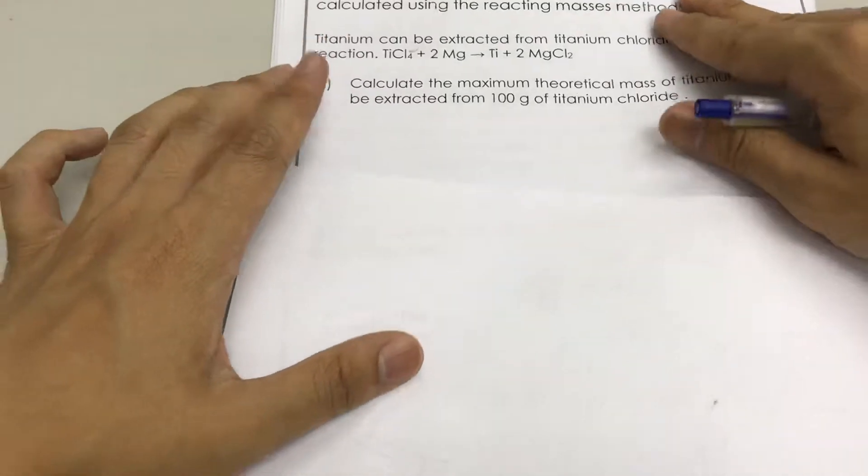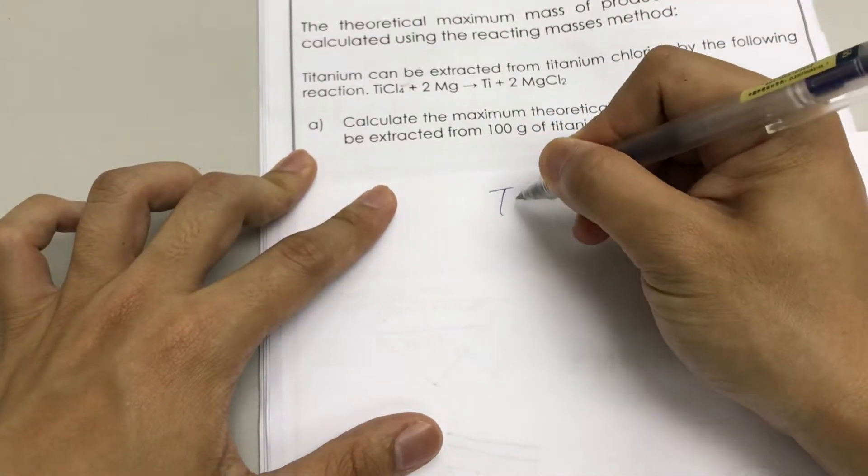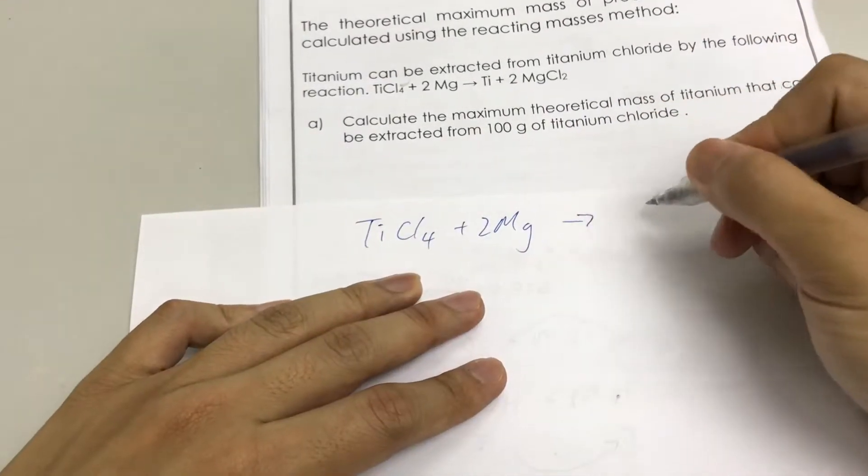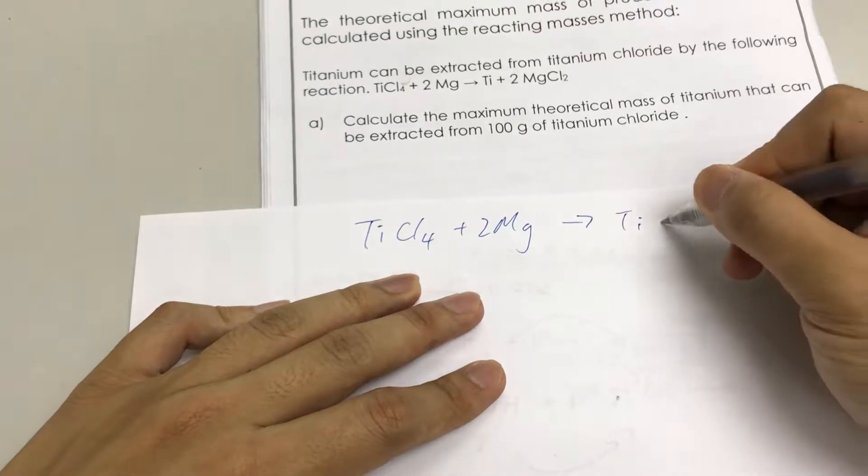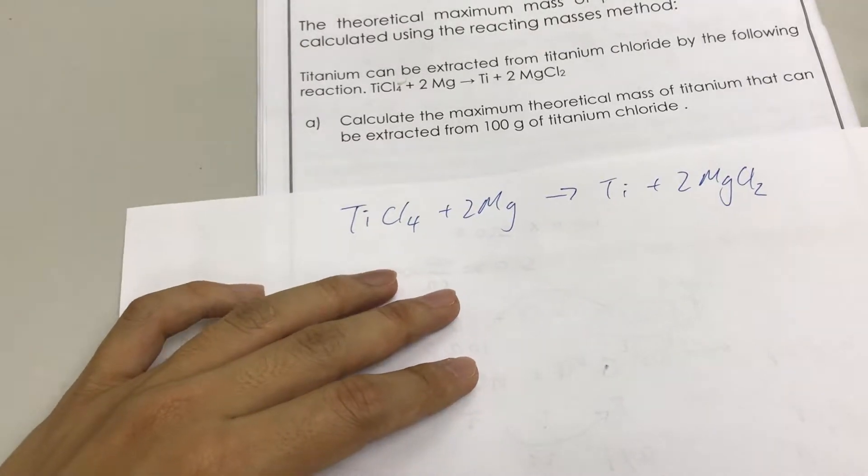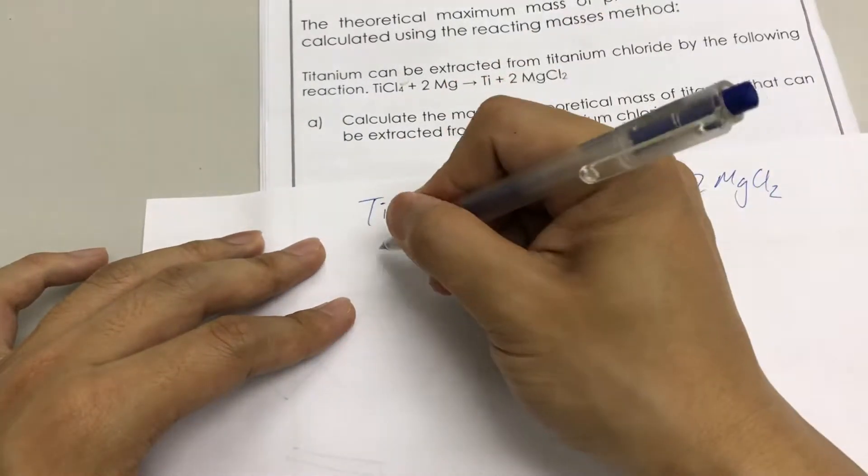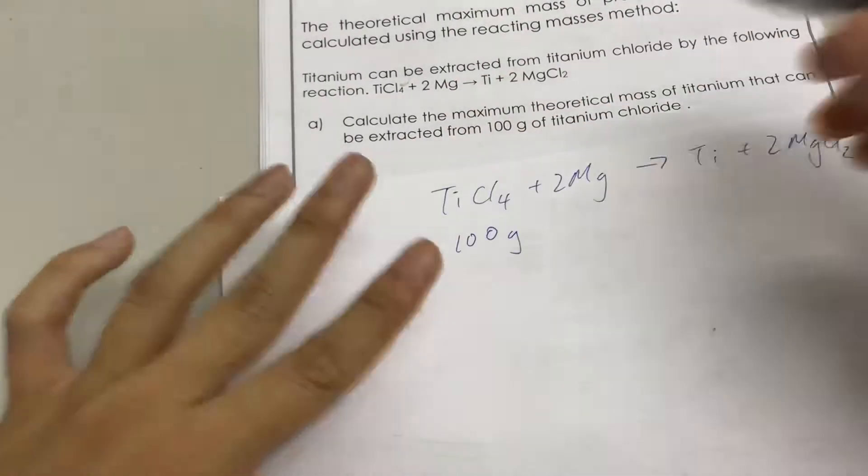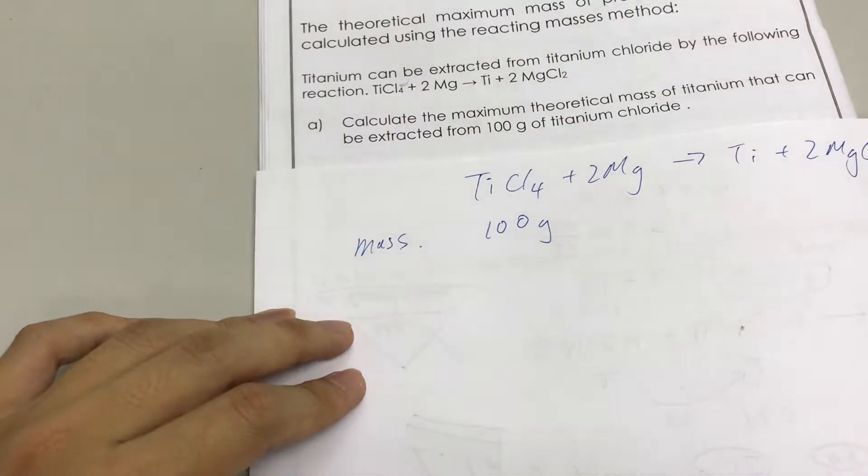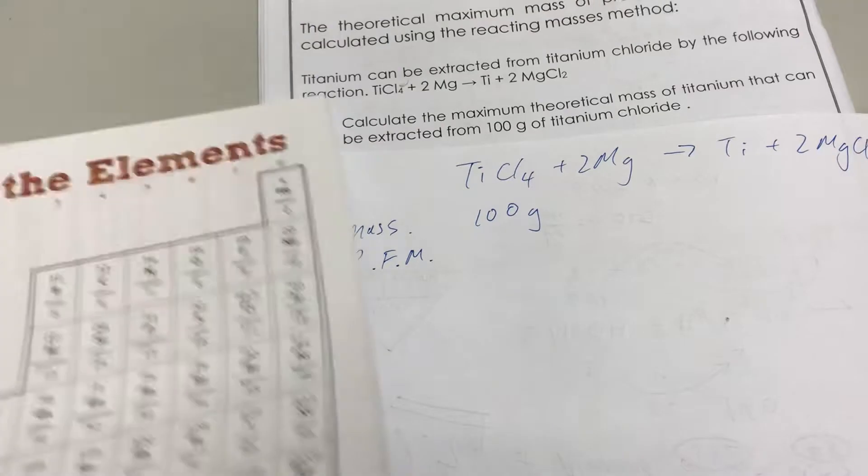We have here TiCl4 plus 2Mg, which gives Ti plus 2MgCl2. We now use our skills from reacting masses. You have 100 grams of titanium chloride, so 100 grams right there. We put here on the side, this is the mass that we have. We now look for the relative formula mass, or the molar mass.